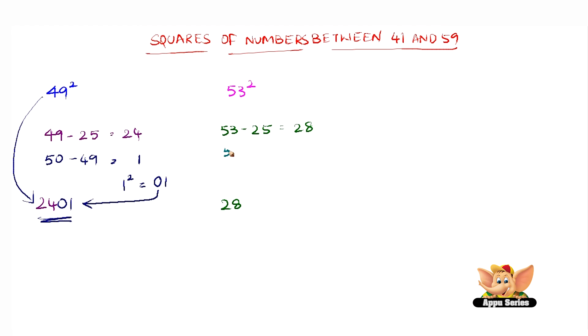Subtract 50 from 53 for which we get 3. Now square the 3. 3 square is 9 and since 9 is less than 10, place a 0 to the left of 9 and join that to 28. And here it is, 2809 is the answer of 53 square.